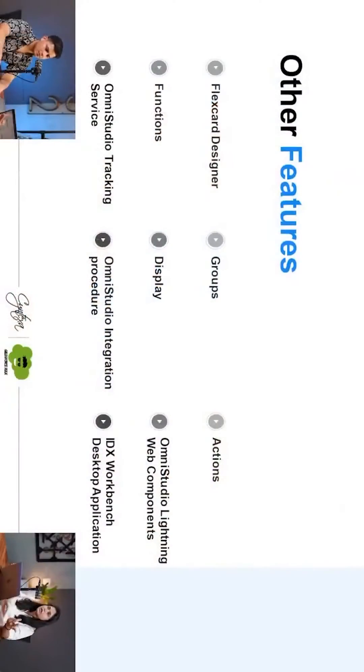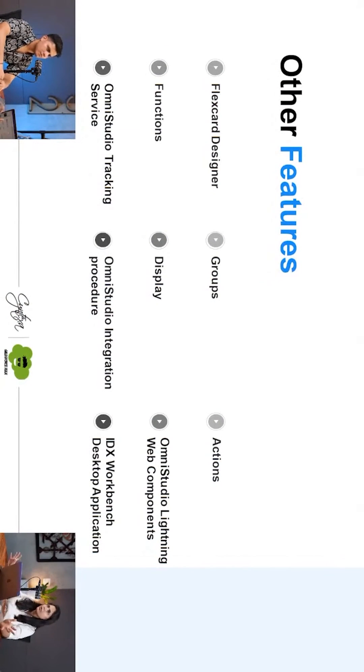There are a couple of other features of Vlocity like FlexCards, Integration Procedures, Groups, OmniStudio Lightning Web Components, and many more.